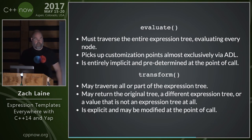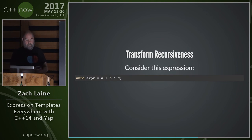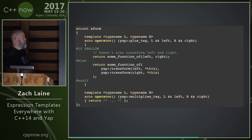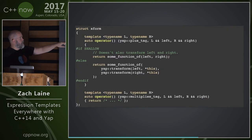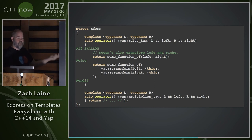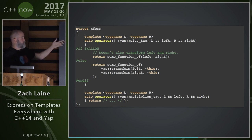To underscore the recursion control in transform: given 'a + b*c', if you write a 'shallow' transform that matches the plus tag at the top, you get some function of left and right, where right is the full 'b*c' sub-expression — it doesn't recurse into it. If you write the transform to explicitly call transform on left and right before combining them, you get the recursive version. This control is critical and is a major point of confusion for new users — without it you can easily get into trouble.